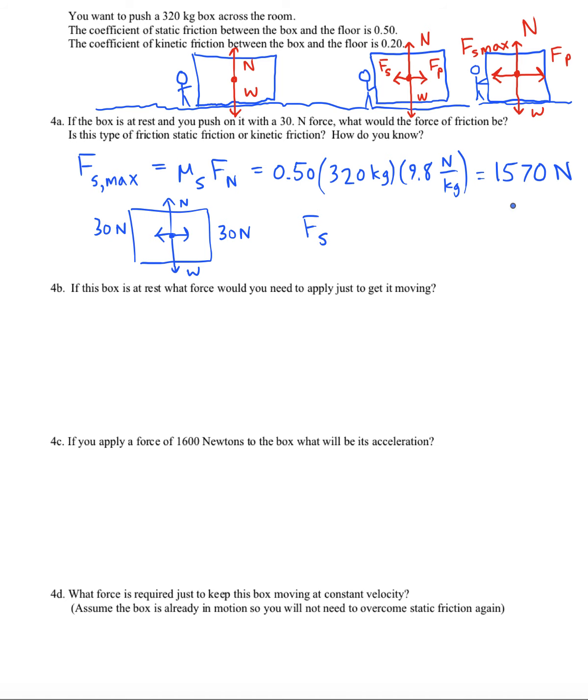And this shows the difference between the static friction and the maximum static friction. The formula for static friction is that the static friction will always be less than or equal to mu s times fn. So it could be as low as 0, or it could be as high as 1570, or anything in between depending on how the box is being pushed. At the current time though, with a person pushing with 30 newtons, the static friction will also be 30 newtons.